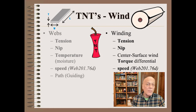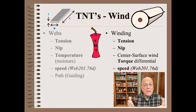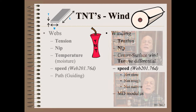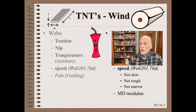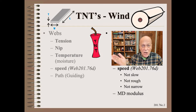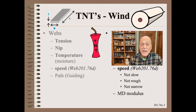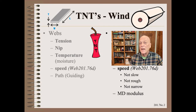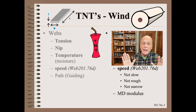We will have more to say about this in next week's show, Web 201.76D, so stay tuned to this all-web-handling channel. Speed dependence occurs when the web is simultaneously not slow, not rough, and not narrow — in short, where air entrainment comes into play, as can be calculated, measured, or modeled in any number of ways.